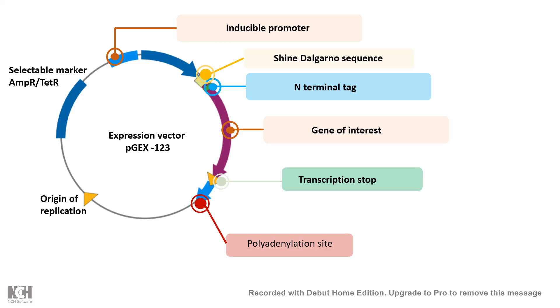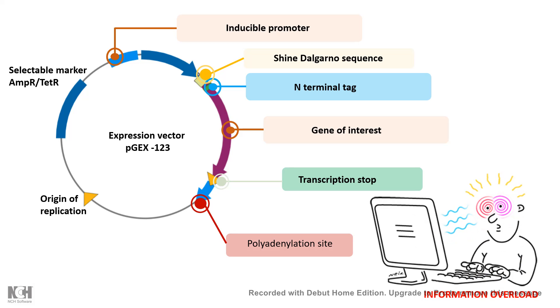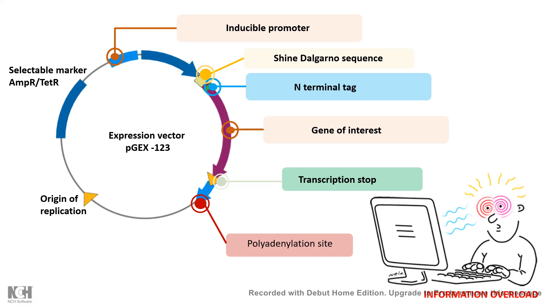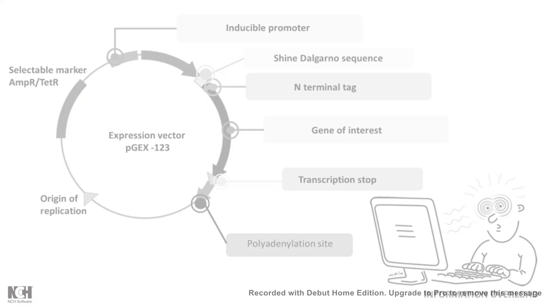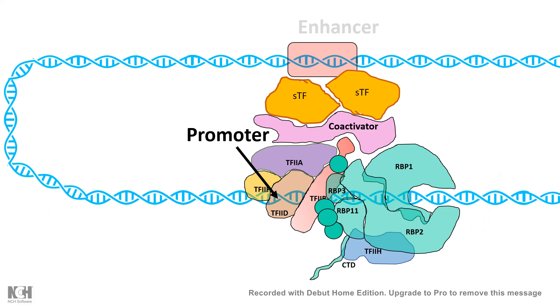You can use a GFP tag, a His tag, a mannose-binding protein tag, or other tags to purify or solubilize proteins. A fluorescent marker makes it easy to track protein localization inside a cell. You also have the Shine-Dalgarno sequence, a polyadenylation site, and transcription stop sites — all features of the expression vector.